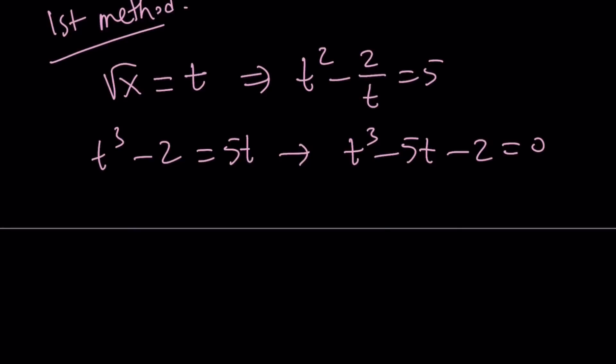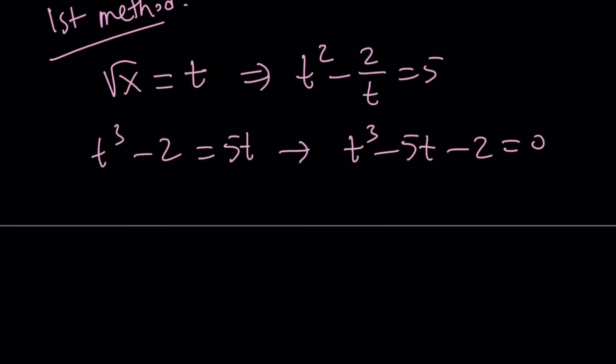And then you get t cubed minus 5t minus 2 is equal to 0. Now, if you wanted to solve this as a cubic equation using the cubic formula or whatever else, that will be the third method. So I briefly talked about it and I can continue with the first one.